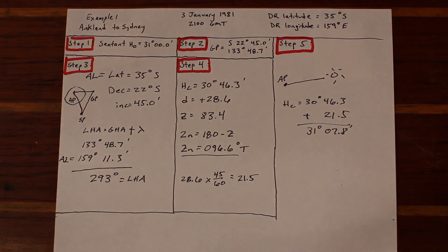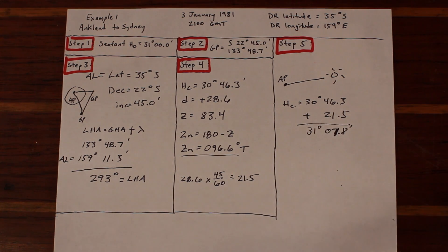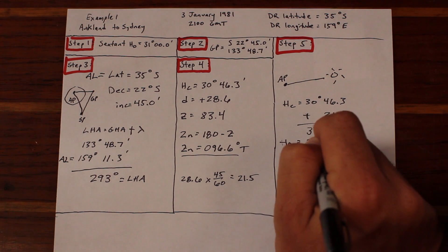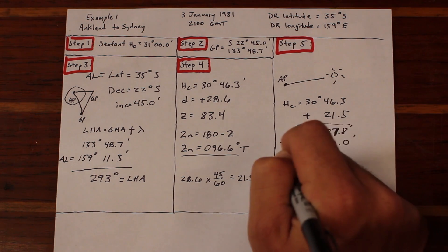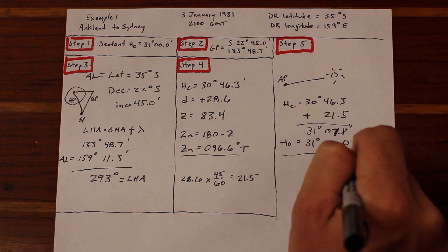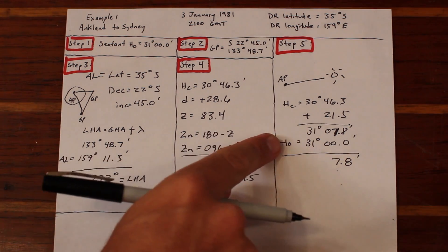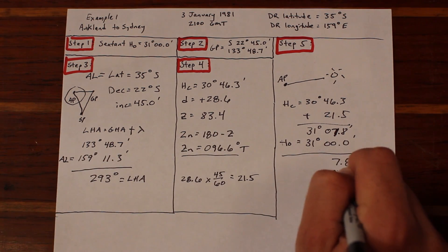Moving on, we apply the D number correction to our computed height and end up with a computed height of 31 degrees, 07.8 minutes. We compare it to our observed height of 31 degrees, and we get a difference of 7.8 minutes. Is it towards or away? Right, it's away in this case. Let's plot it, which should be a familiar concept by this point.